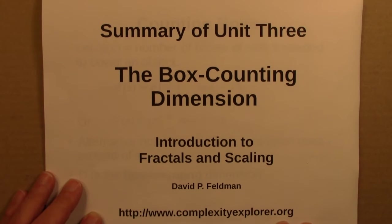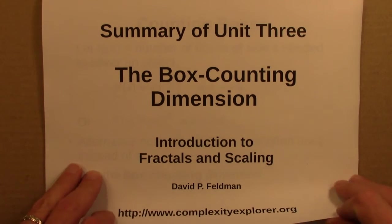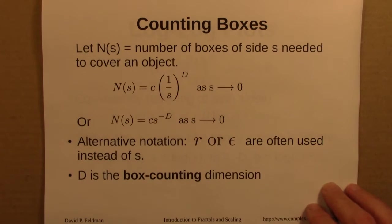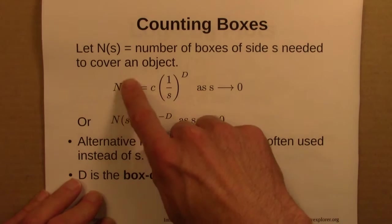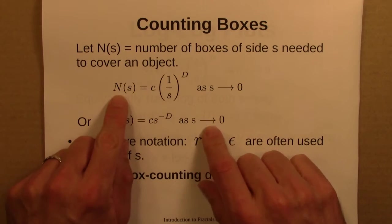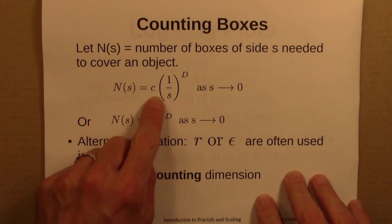So let's summarize the material we covered in unit 3. Unit 3 was on the box counting dimension. And so we began by counting boxes. How many boxes of a certain side s are needed to cover a certain object? We called that N(s). We did a number of experiments and came up with this relationship. The number of boxes needed to cover is some constant times 1 over s to the d.